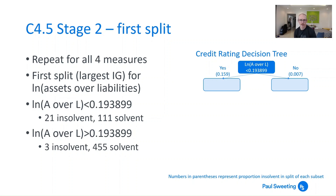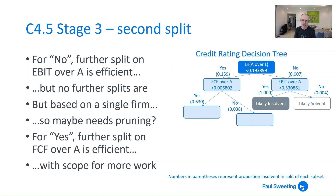Running this across all variables, I find the best initial classifier isn't actually EBIT over assets — it's log of assets over liabilities. If I've got a log of assets over liabilities below 0.193899, I've got 21 insolvent and 111 solvent. If it's greater than that figure, I've only got 3 insolvent and 455 solvent. So that gives me the greatest information gain. A further split on EBIT over assets is then efficient, meaning I can identify all of the insolvent and only insolvent ones using that second classifier.